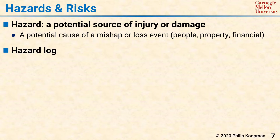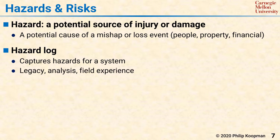A hazard log is used to record hazards identified for a particular system. The hazard log starts with a list of hazards from any similar legacy system to capture lessons learned from previous projects. Additional hazards are added, first by analysis, and later by recording field experience after the product is deployed.